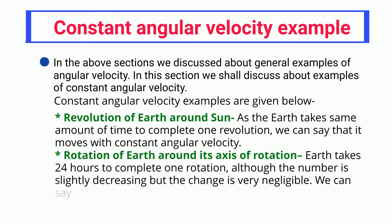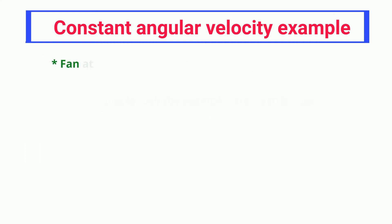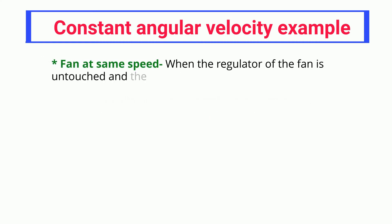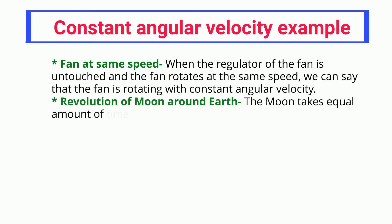Rotation of Earth around its axis: Earth takes 24 hours to complete one rotation. Although this number is slightly decreasing, the change is very negligible, so we can say it follows motion with constant angular velocity. Fan at same speed: when the regulator of a fan is untouched and the fan rotates at the same speed, it is rotating with constant angular velocity.